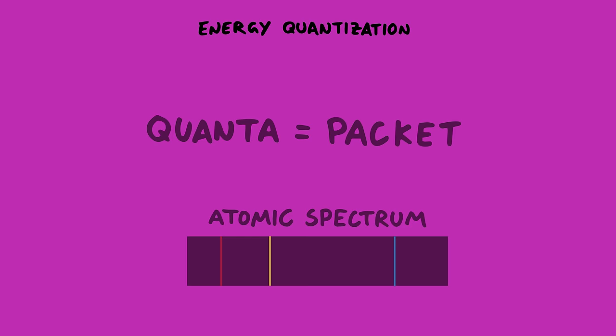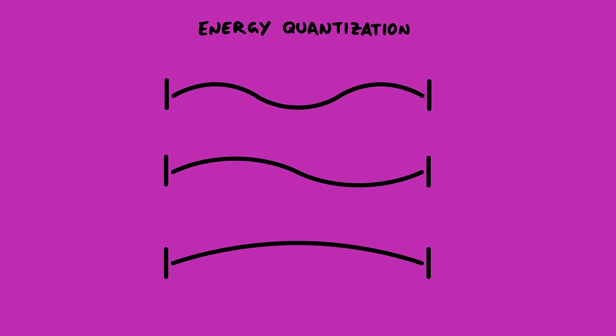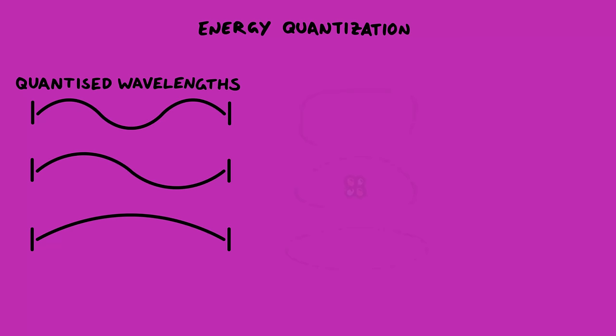Imagine a string that's tied at both ends, like a guitar string. If you pluck it, only certain waves can exist, because the ends are tied down. In this situation we say that the wavelengths are quantized to certain values. The same thing happens if you tie the ends of the string together, because the waves have to match up. They can only vibrate in certain restricted ways.